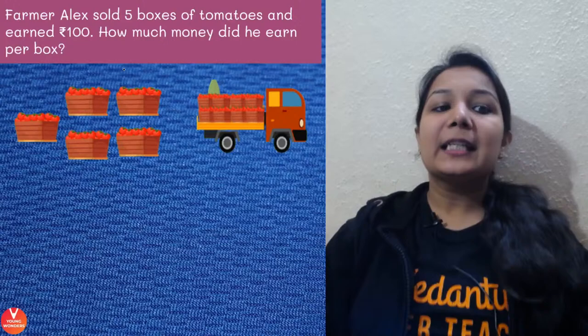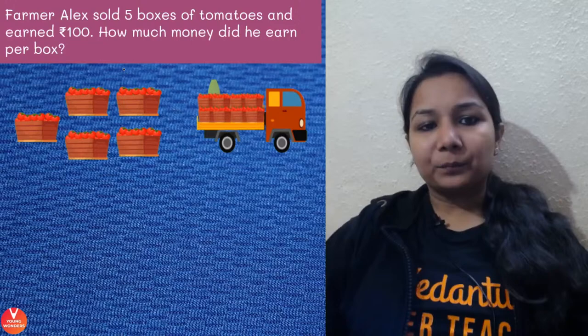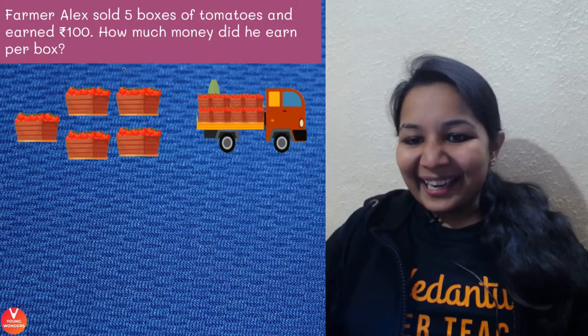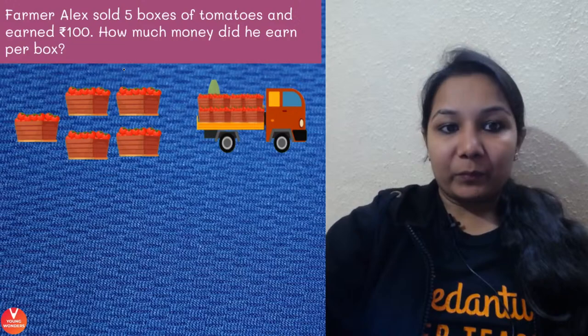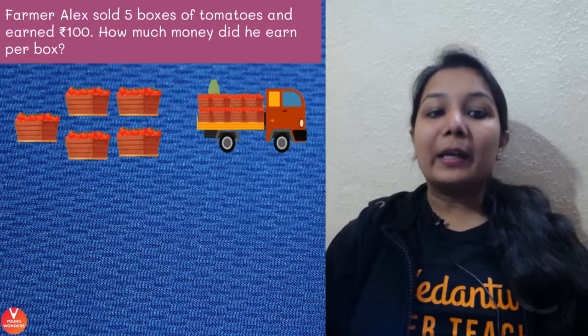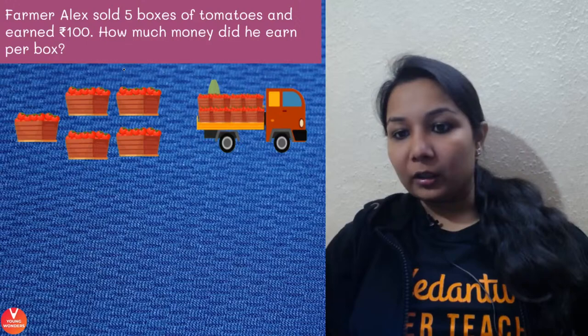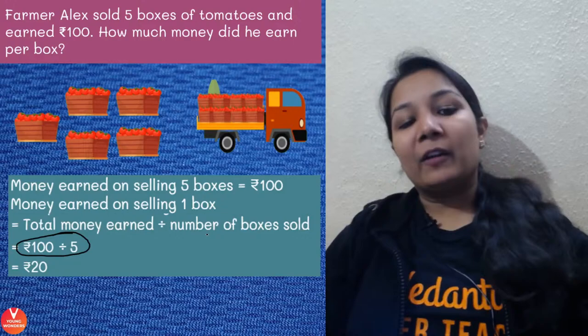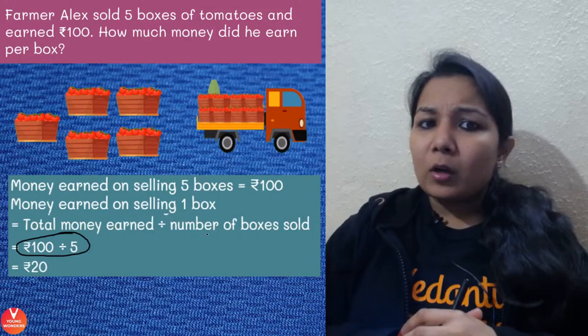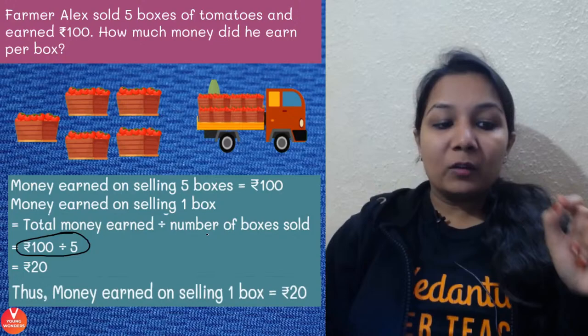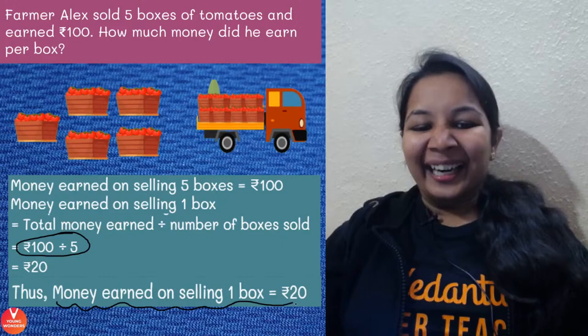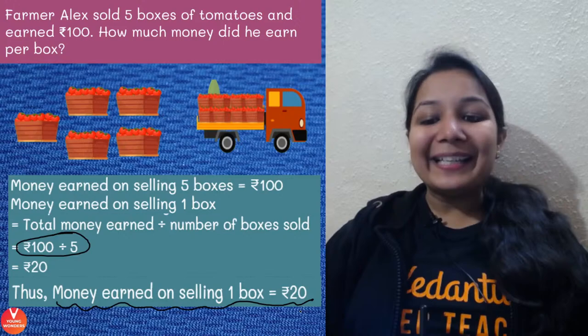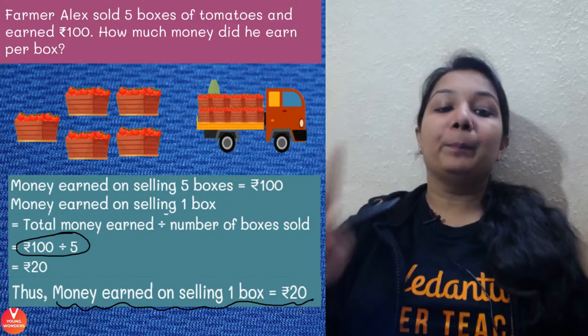Farmer LX sold five boxes of tomatoes and earned rupees 100. How much money did he earn per box — meaning for each box? If by selling five boxes he earned 100 rupees, then for one box it is 100 divided by 5. That means LX earned rupees 20 per box. Money earned on selling one box is rupees 20 — units are very important, so be careful.